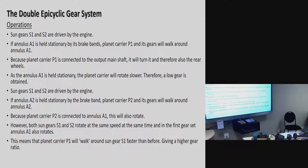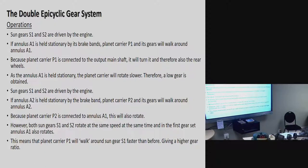Construction of the double epicyclic system: the system uses two interconnected epicyclic gear systems. The engine always drives both sun gears S1 and S2. Annulus A1 is connected to planet carrier P2 and its gears. Planet carrier P1 and its gears P1 are connected to the output main shaft. The brake bands fit over annulus A1 and annulus A2. Sun gears S1 and S2 are driven by the engine, and planet carrier P2 is mounted to annulus A1.